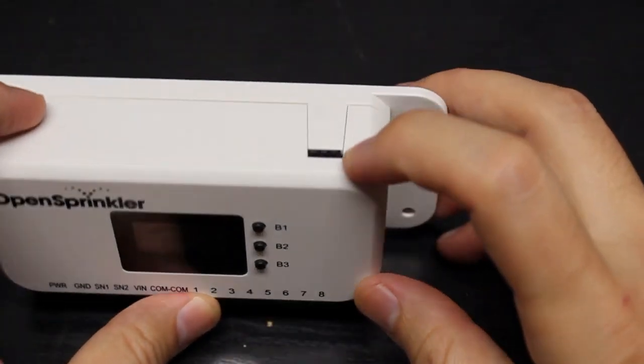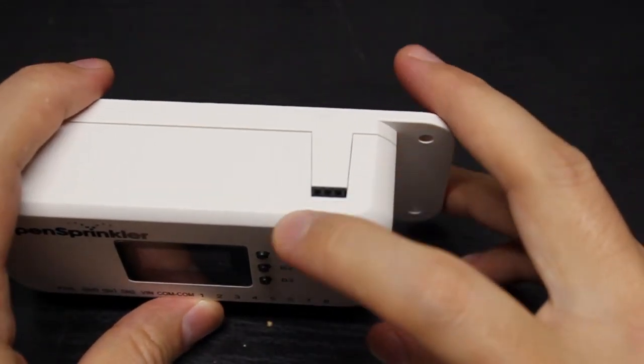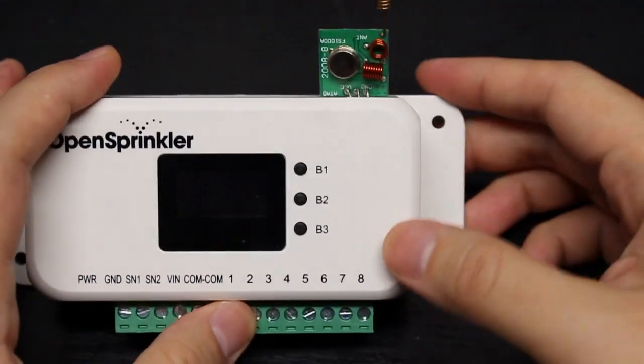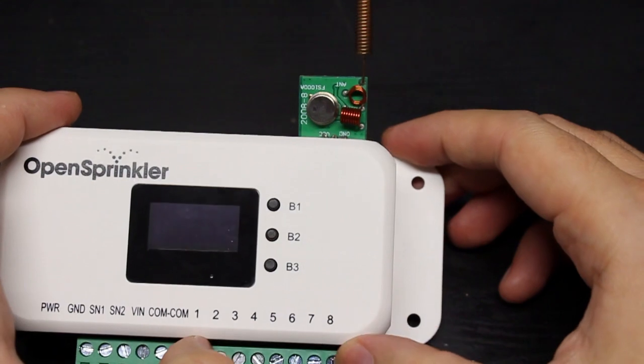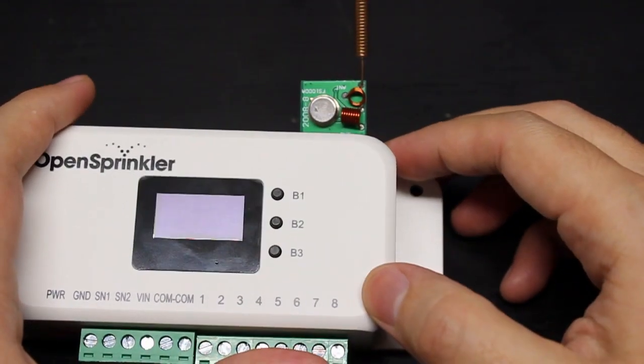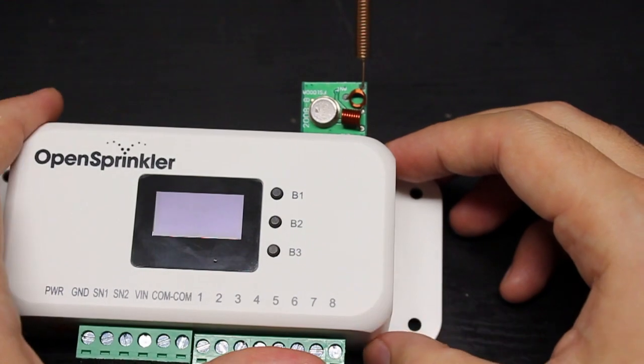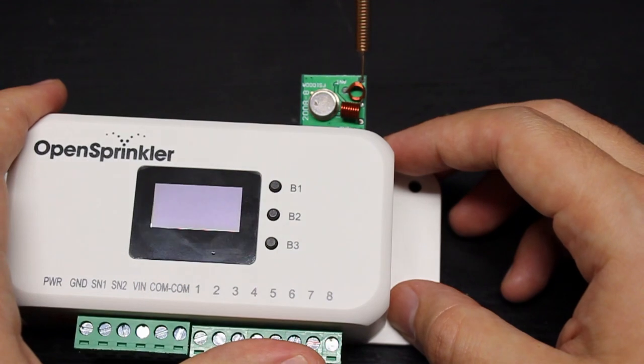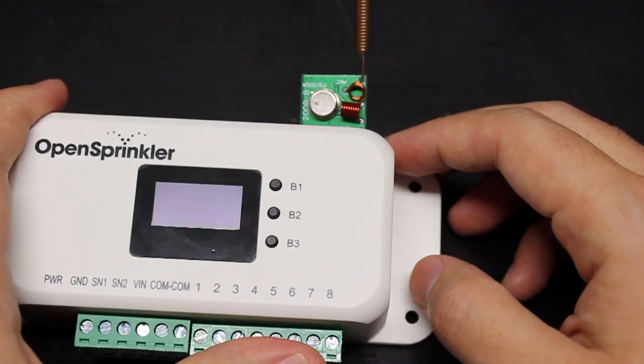Finally, at the top of OpenSprinkler is a 3-pin connector. This 3-pin connector is for plugging in a radiofrequency transmitter. You can use the radiofrequency transmitter to allow OpenSprinkler to talk to certain radiofrequency wireless power sockets. This feature is explained in detail in the OpenSprinkler user manual.